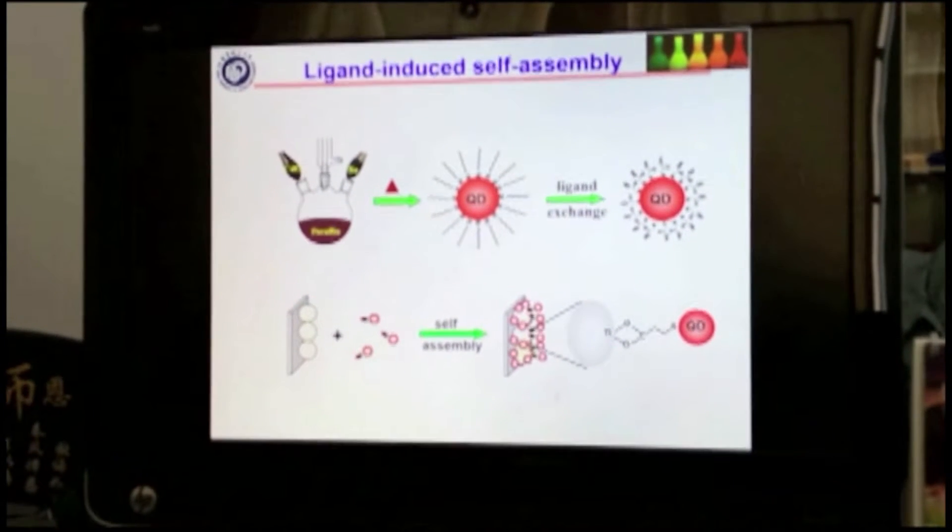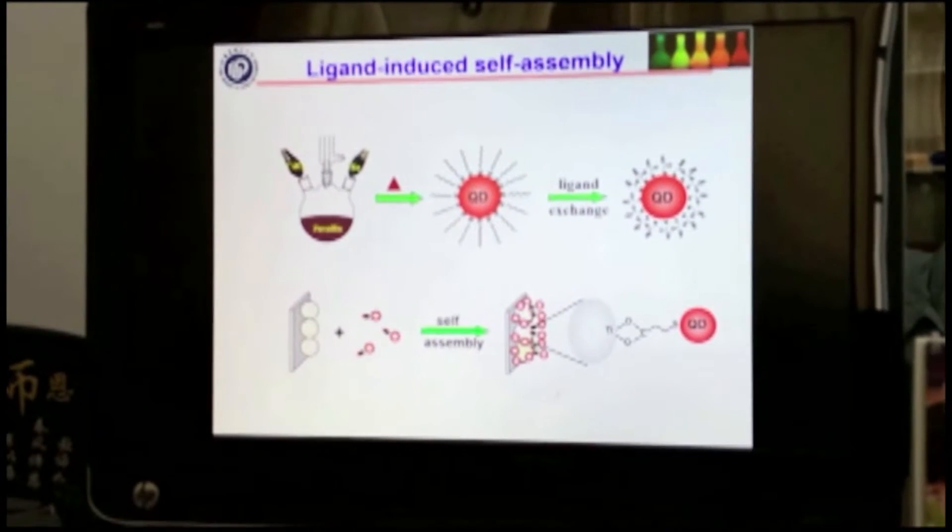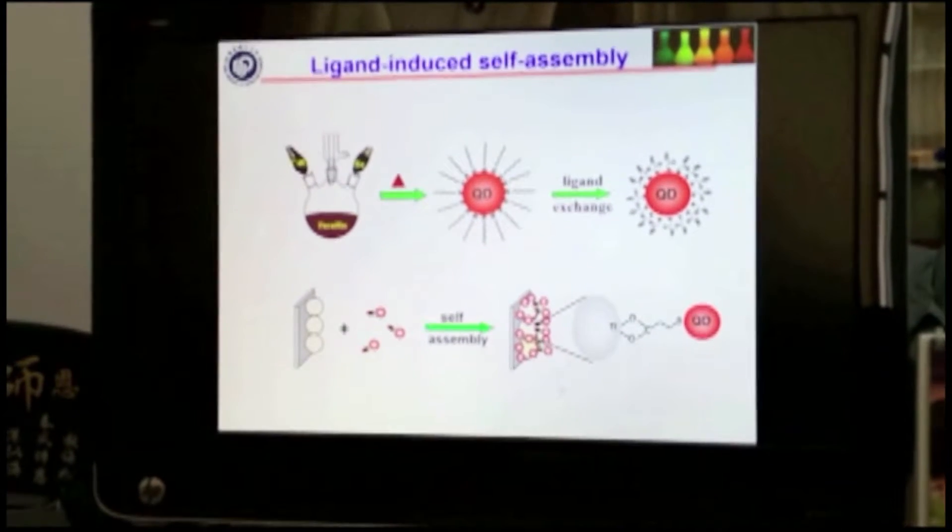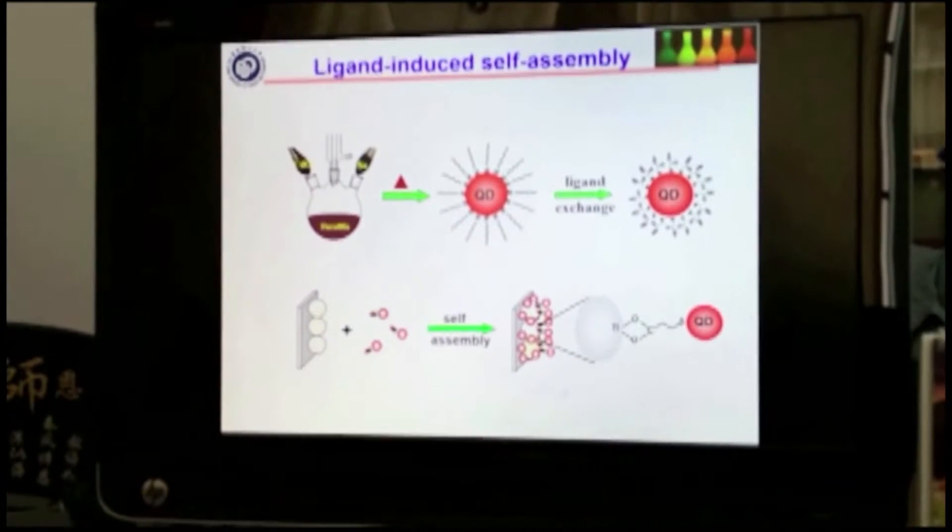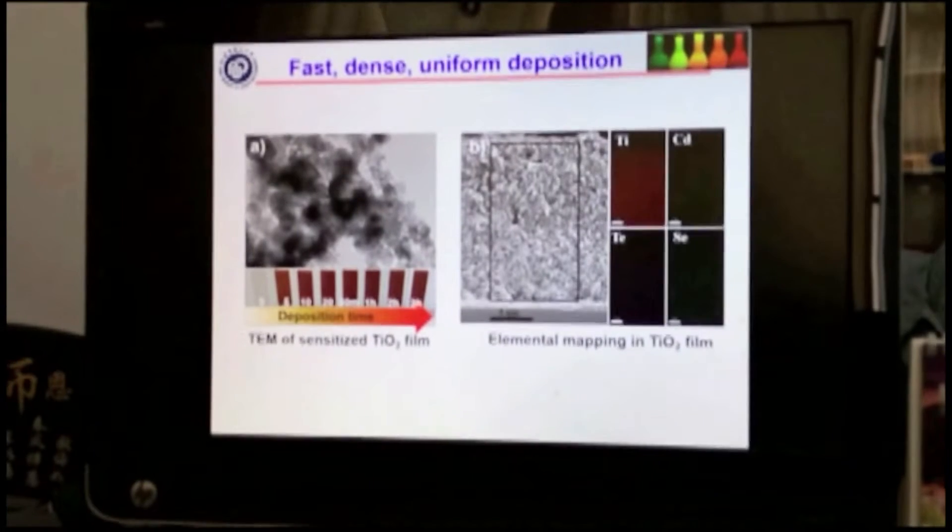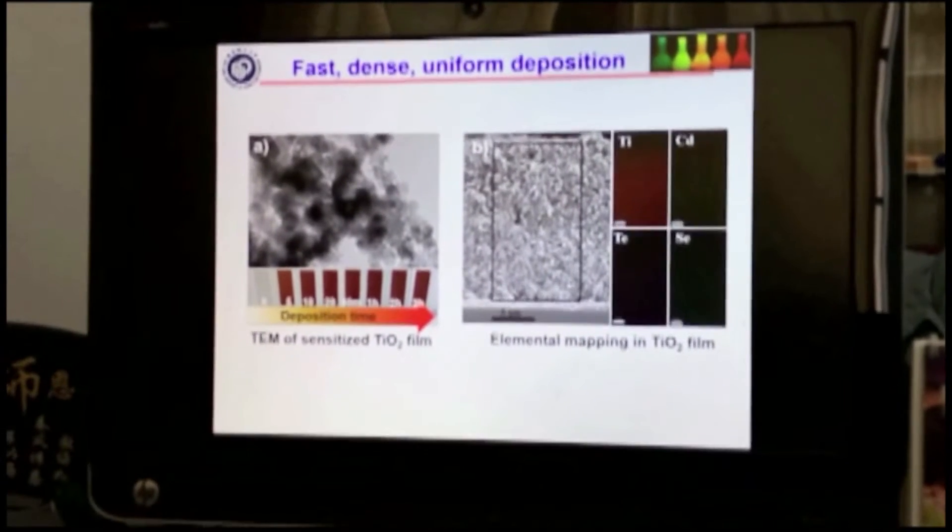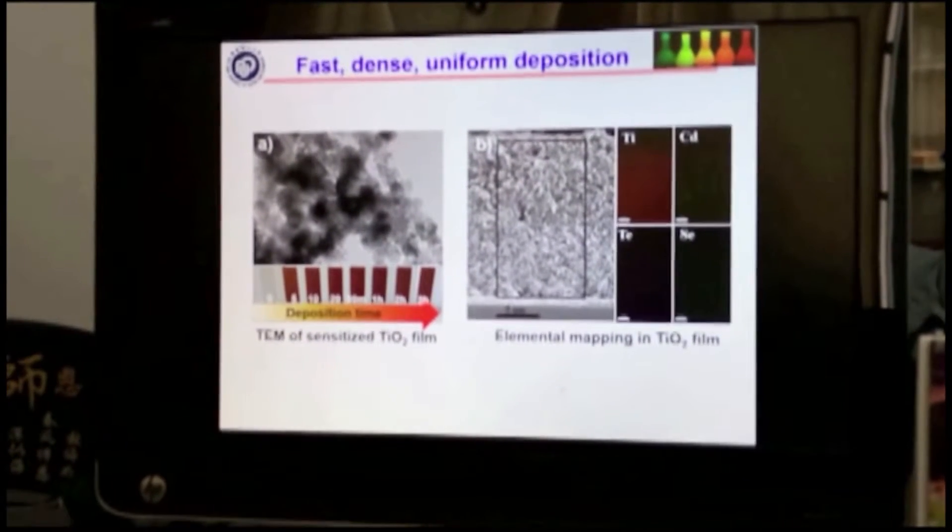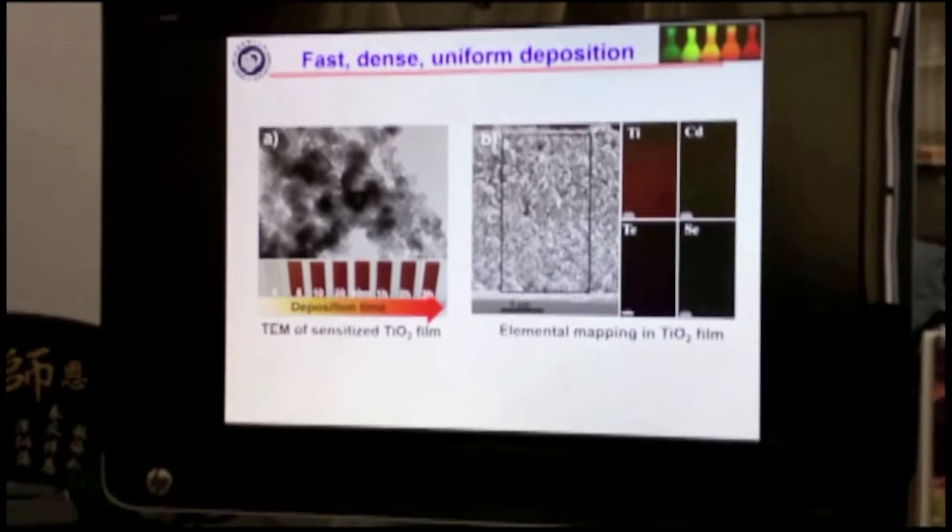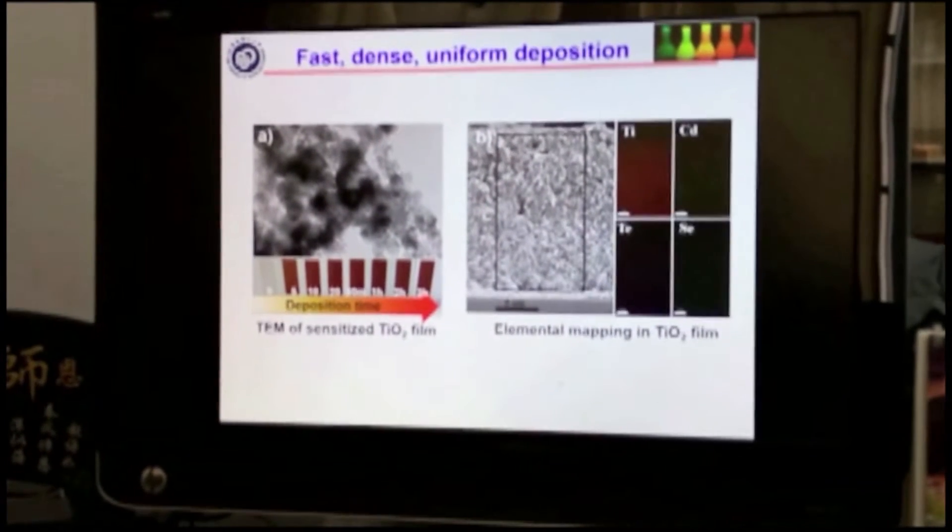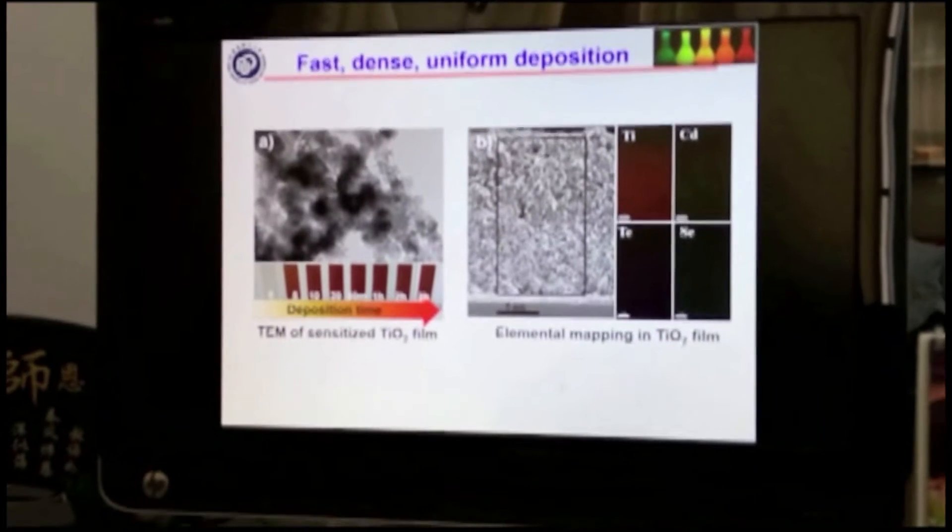we aim to present an overview of the construction of quantum dot solar cells with the ligand-assisted self-assembly route, which can realize fast, dense, and uniform deposition of quantum dots on titanium oxide film.